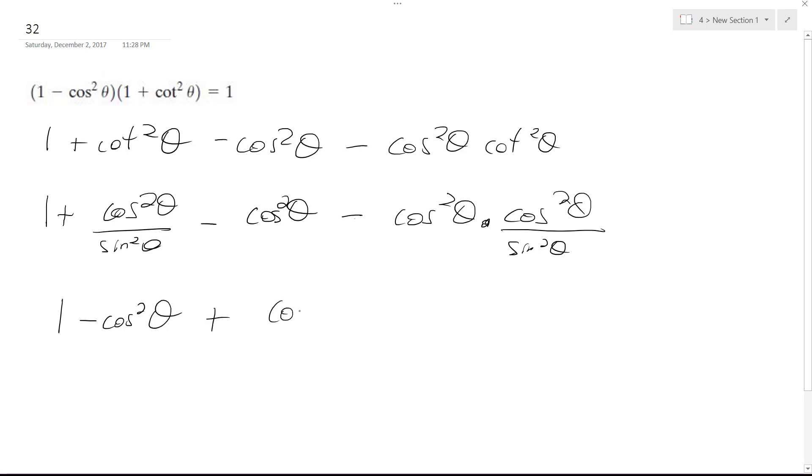Plus cosine squared theta over sine squared theta minus the whole cosine squared theta times cosine squared theta all over sine squared theta.